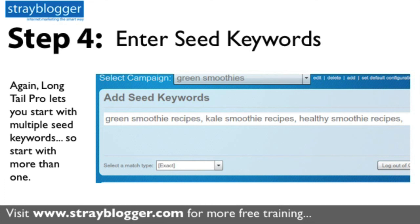So in step four, you're going to actually enter in your seed keywords. These are just comma-separated — you enter those into the box where it says 'add seed keywords.' This is a huge benefit of Long Tail Pro: it lets you start with multiple seed keywords. So you can enter in anything that comes to mind related to the topic. In this example, it was green smoothies — so I have green smoothie recipes, kale smoothie recipes, healthy smoothie recipes — and you could just type in anything you can think of, and it will return a lot more search results.